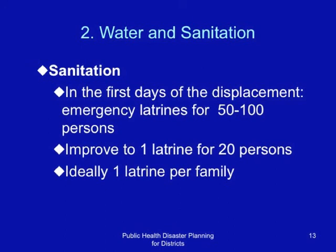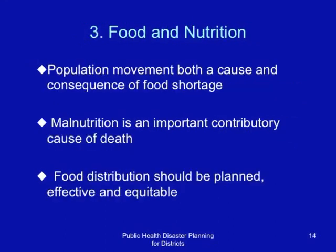Food and nutrition: Population movement is both a cause and a consequence of food shortage. Malnutrition is an important contributory cause of death during complex emergencies. Food distribution should be planned, effective and equitable.